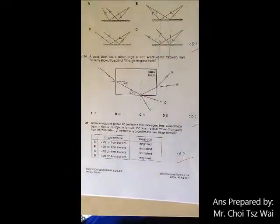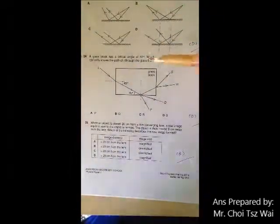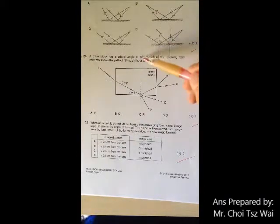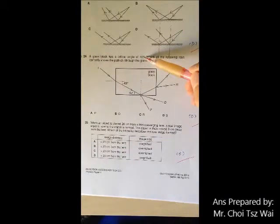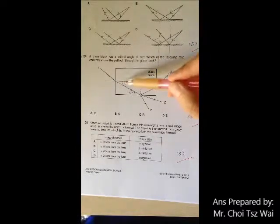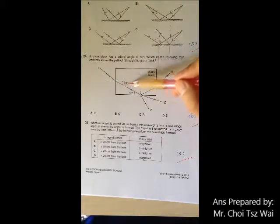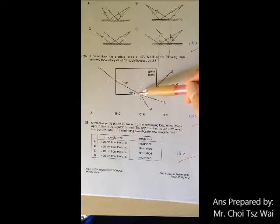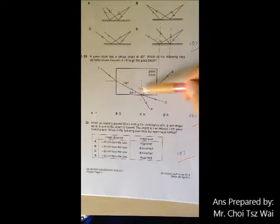Question 24 tests you on your total internal reflection. They already tell you that the critical angle is 42 degrees. A lot of common mistakes is that students, after seeing this 40 degree, quickly deduce that, oh okay, alternate angle. So this angle is 40 degree.